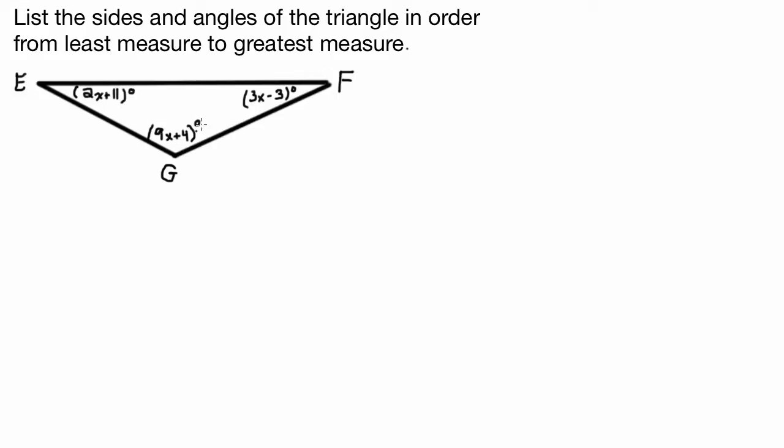So remember, what do the measures of all the angles sum to in a triangle? That's 180 degrees. So this is actually pretty straightforward. All we need to do is say, the measure of angle E plus the measure of angle G plus the measure of angle F equals 180. So we'll just write that down.